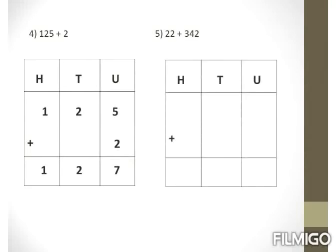Example 5: 22 plus 342. First number 22 has only units and tens; second number 342 has all three places. Arrange by places: 22 gives 2 at units, 2 at tens, and hundreds is empty. Plus 342: 2 at units, 4 at tens, 3 at hundreds. Adding units: 2 plus 2 is 4. Tens: 2 plus 4 is 6. Hundreds: 3 comes as it is. Our final answer is 364.